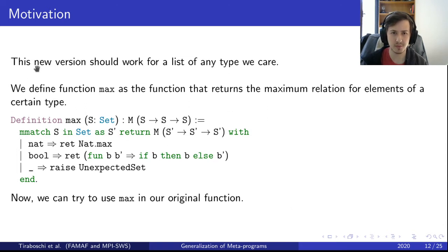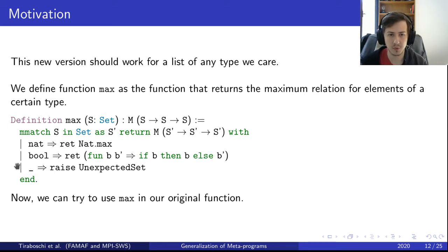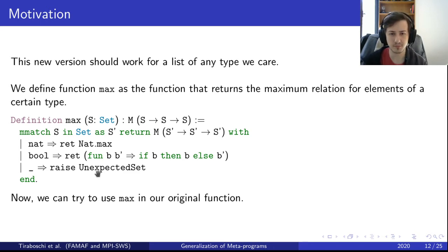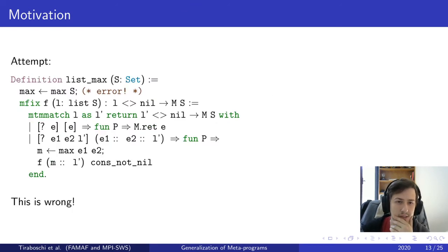So we want to create a new version that is more general. We start by defining max, which is the function that returns the maximum relation for elements of a certain type. What we mean is that we can define this function max for the sets we're interested in — for example nat and bool — but maybe we raise an exception for the sets we're not expecting. This way we can use our function max in our original function, the one we coded in Mtac2.